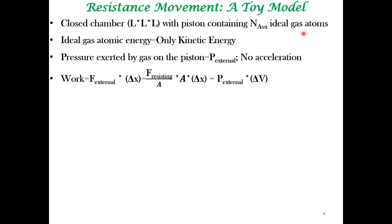We are considering a thought experiment where the piston moves against the external pressure. How does it move? It moves to a very infinitesimal extent — delta x is much, much less than the characteristic length L available. So you can approximate that the volume is not changing that much when you make this small displacement. It is moving against the resisting force that is because of the external pressure.